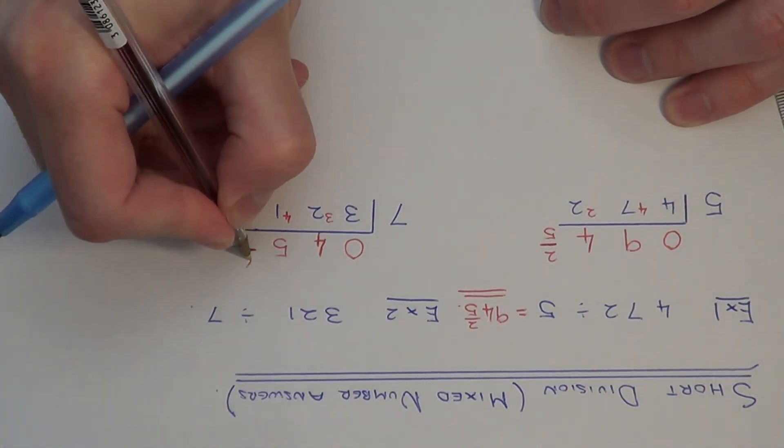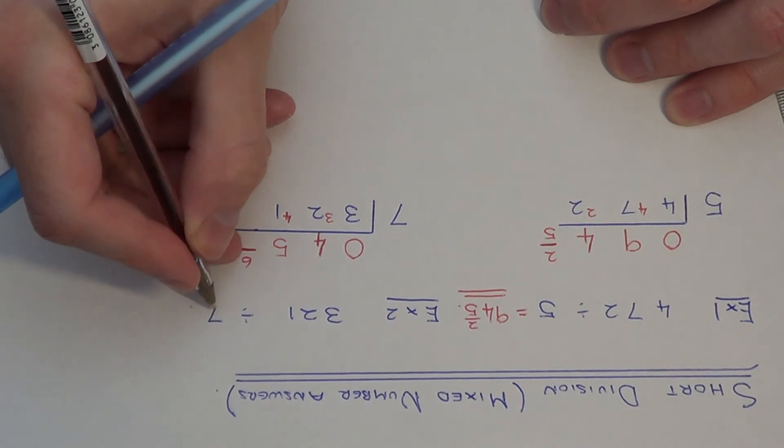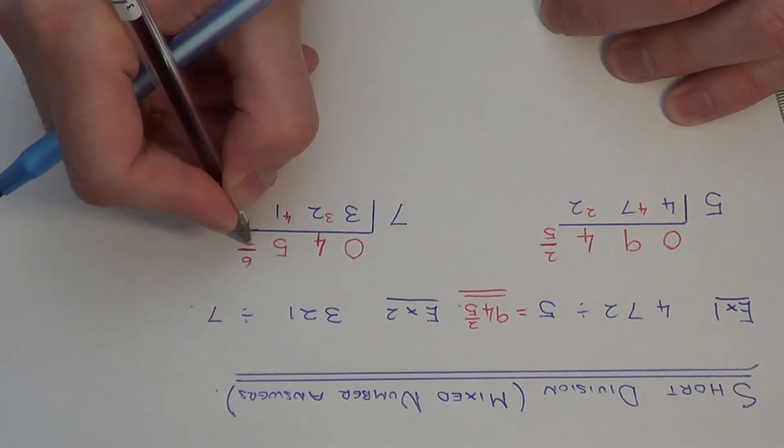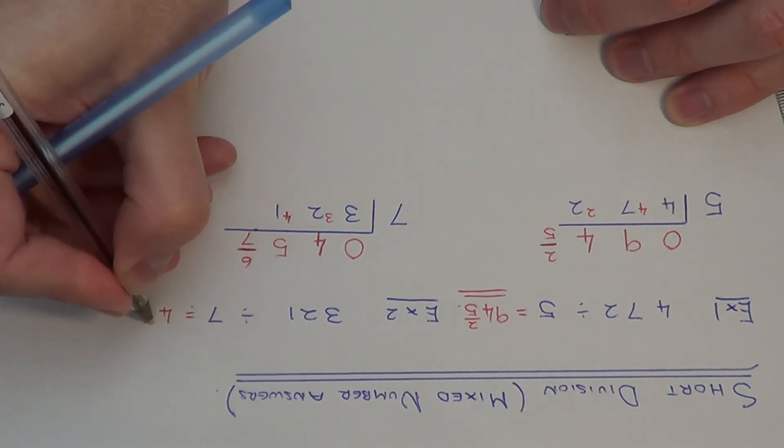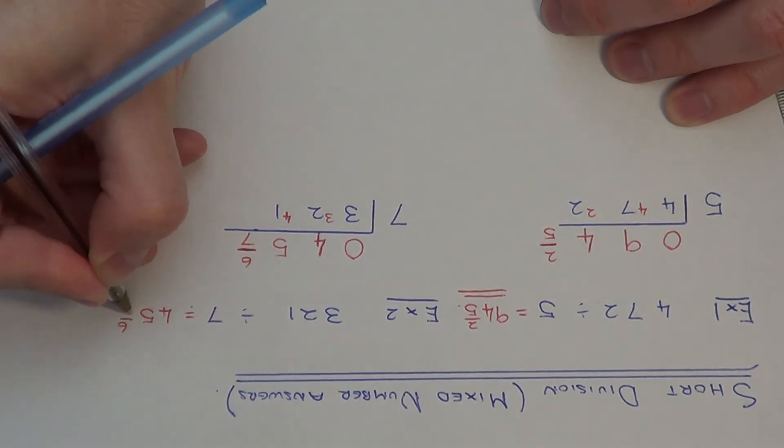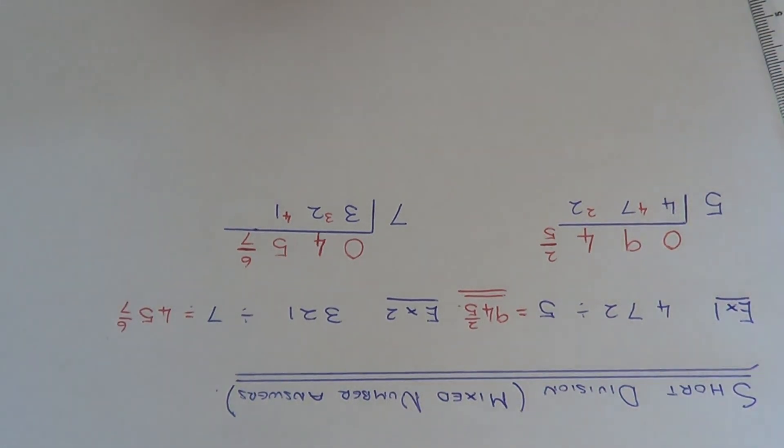So we put the 6 on the numerator. And since we were dividing by 7, this goes on the denominator. So our final answer is 45 and 6 sevenths. Thanks for watching.